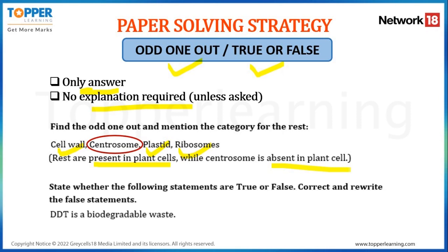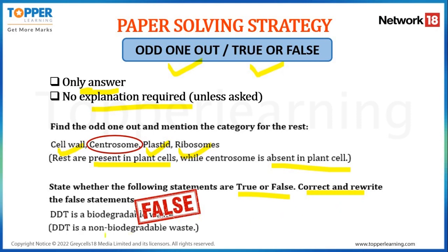One more example with respect to true or false. Here, the question states that you have to write whether the statement is true or false, and if it is false, you have to correct and rewrite it. The question is: DDT is a biodegradable waste. The correct answer is false, because DDT is a non-biodegradable waste. In both these question types, you were asked to write an explanation, and that is where you need to mention it. Otherwise, you are not expected to give any explanation in your paper.